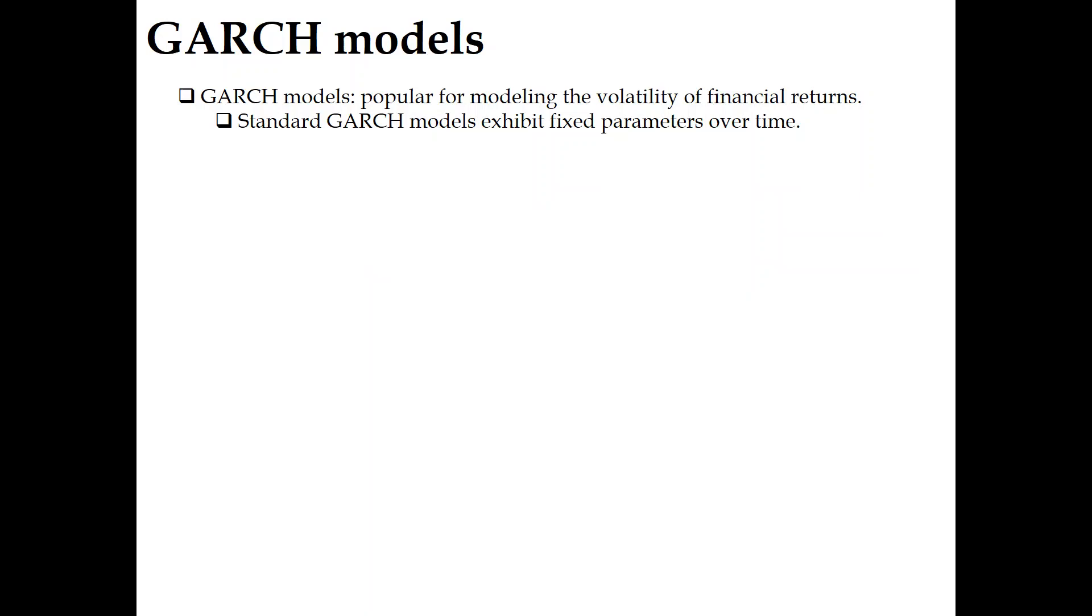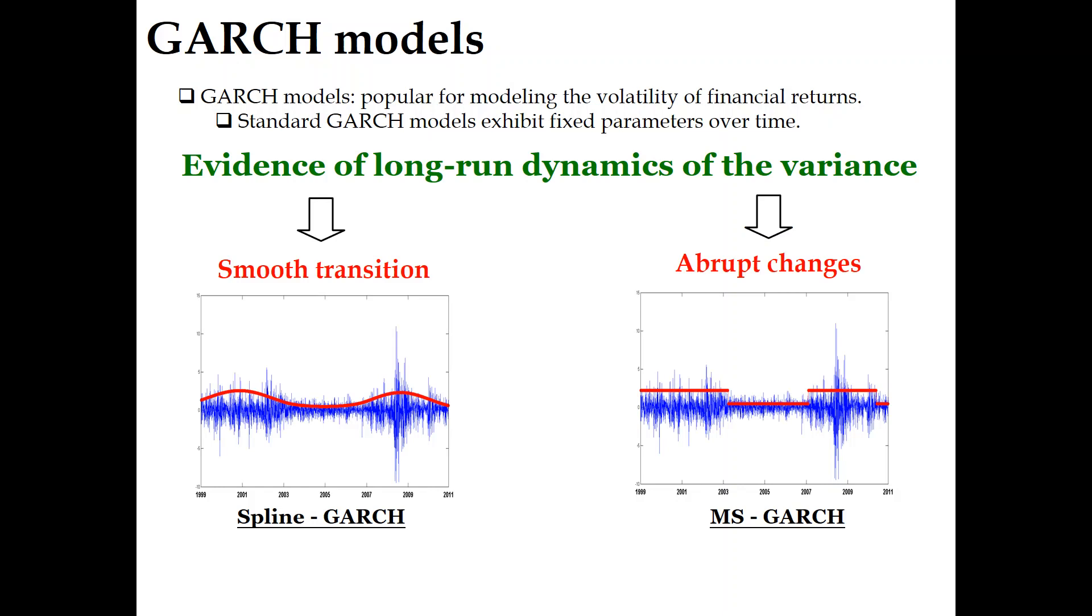GARCH models are popular for modeling conditional variance of financial returns. However, a standard GARCH process assumes fixed parameters over time, an assumption that is too restrictive for large sample sizes. As illustrated in the bottom of the slide with the S&P 500 log returns, the long-term variance typically varies over time. More complex processes like the spline GARCH model or the Markov-switching GARCH model with persistent regimes could take this feature into account.